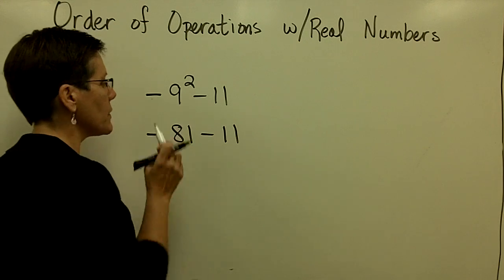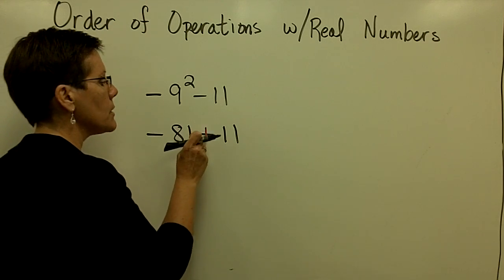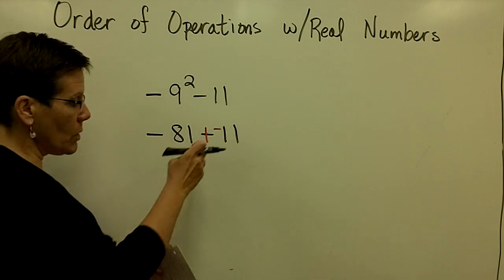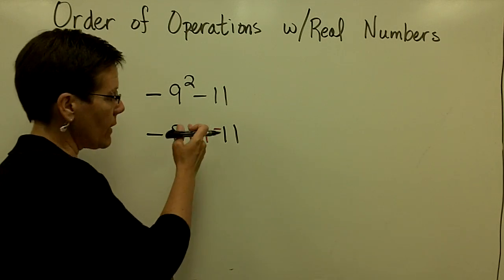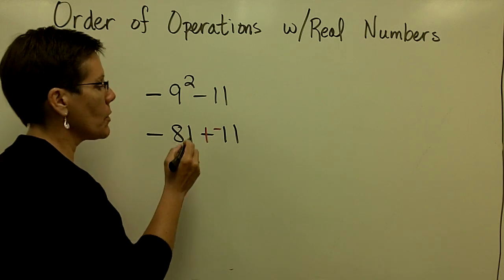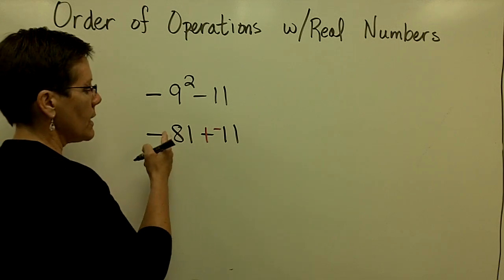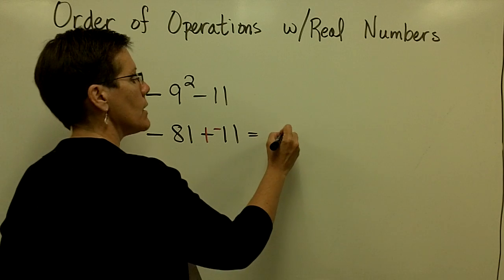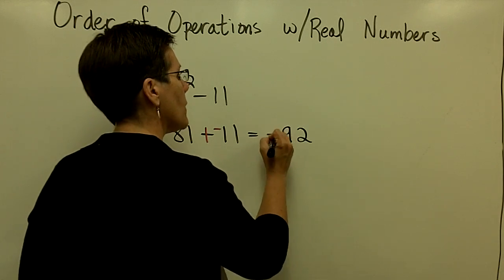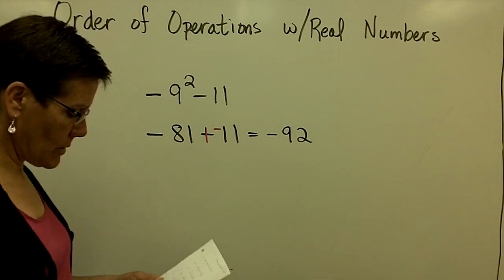Again, be very careful. There are no parentheses around that negative 9. I have to add the opposite. I'm hoping you can get away from writing that red marks on your paper, adding the opposite, but it's not necessary to be successful in the class. And then I'm adding two numbers with like signs, so their absolute values add to be 92, and their common sign is a negative sign.